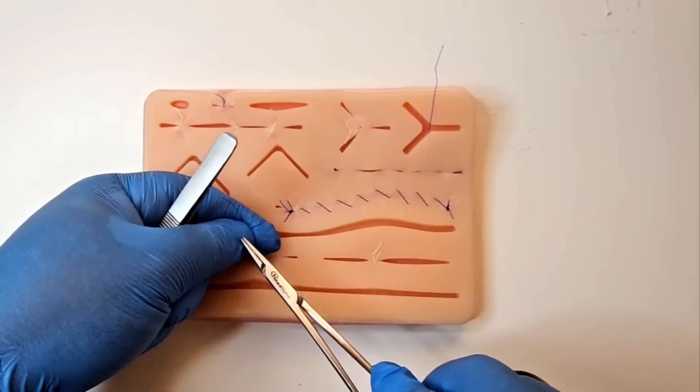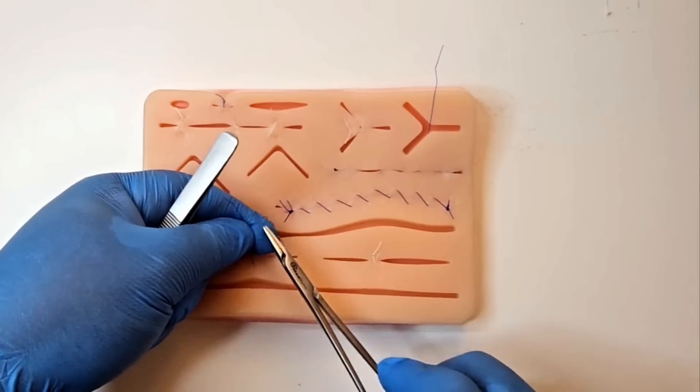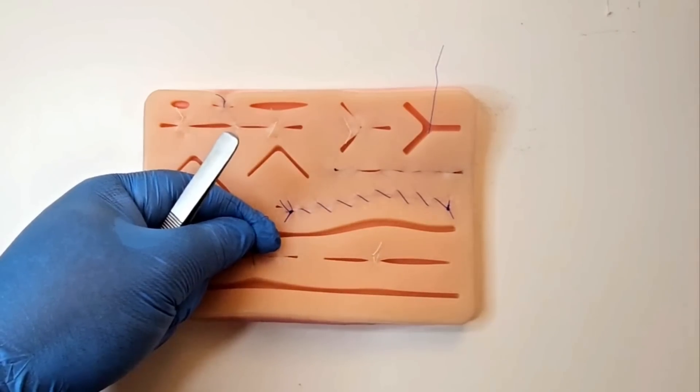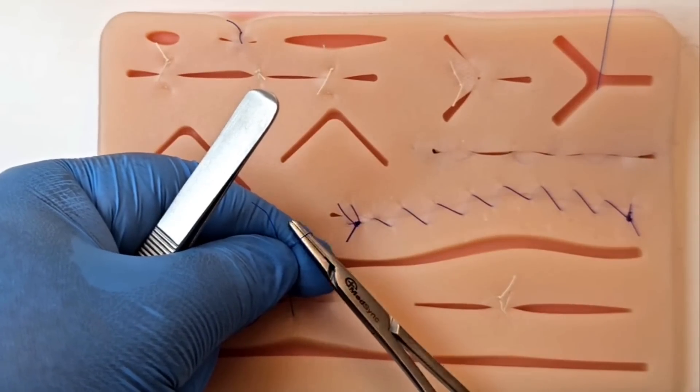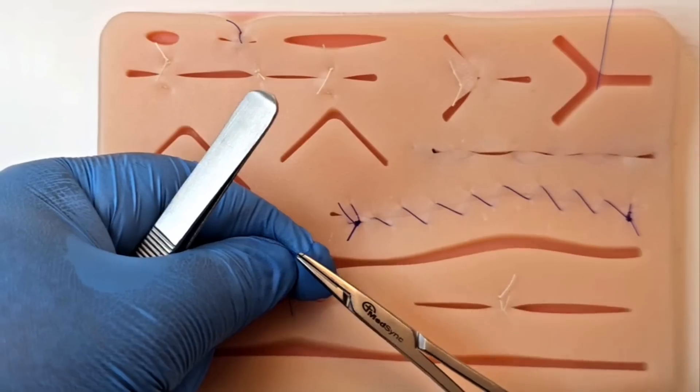Keep the tension between your thumb and index. Your needle holder now goes under the suture and you grab the short thread and pull it through.